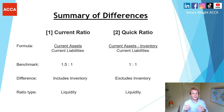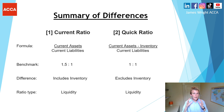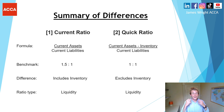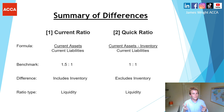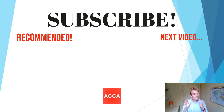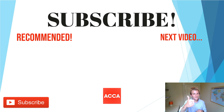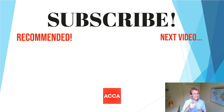In summary: the current ratio and quick ratio have two different formulas and two benchmarks. The current ratio includes inventory with a benchmark of 1.5 to 1; the quick ratio excludes inventory with a benchmark of 1 to 1. Both are liquidity ratios focused on working capital and cash flow management — analyzing cash coming in from current assets versus funds leaving through current liabilities. If you follow this summary of differences, you're going to get full marks in your examination. Make sure you subscribe and give this a like!